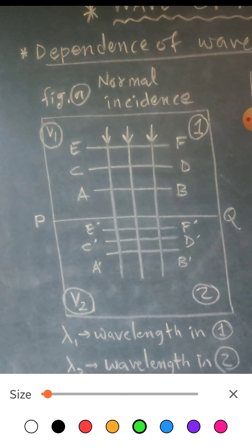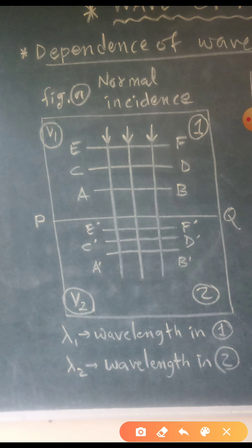Now observe the figure carefully. Here let us assume that V1 is the speed of light in medium 1, V2 is the speed of light in medium 2. Also let us assume that lambda 1 is wavelength of light in medium 1 and lambda 2 is the wavelength of light in medium 2. Consider a monochromatic light incident normally on a boundary PQ as shown in the figure. This is the boundary PQ separating two media, medium number 1 and medium number 2, and the light is incident normally, meaning angle of incidence I is equal to 0. Remember this.